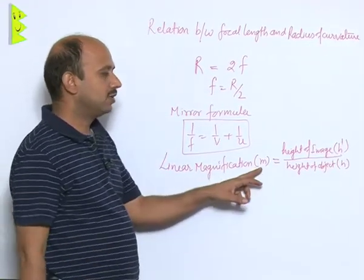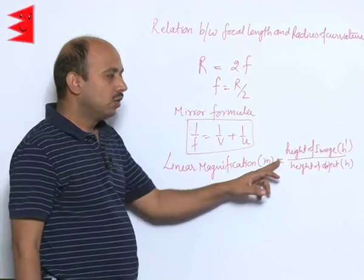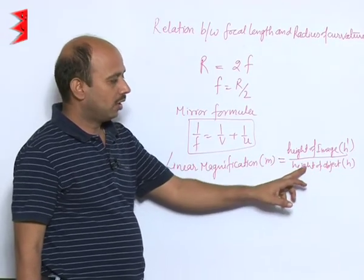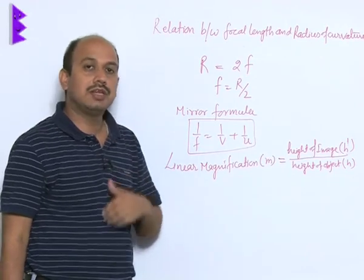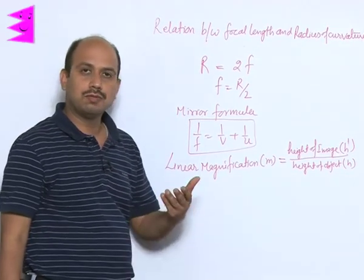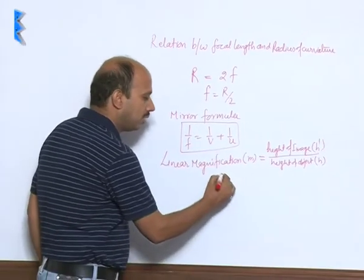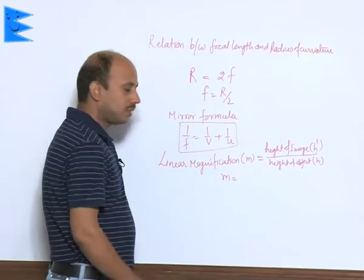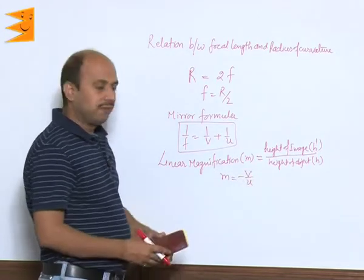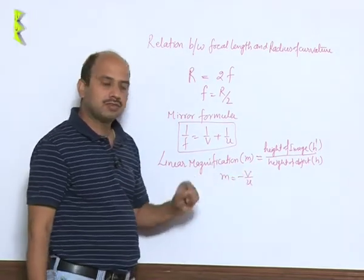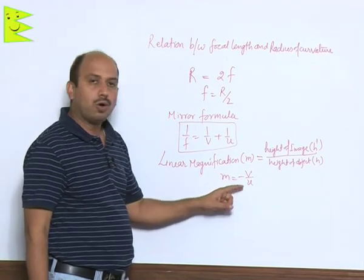Linear magnification m is equal to height of the image upon height of object. Linear magnification is basically the ratio of height of image to the height of object. We can also write m is equal to minus v upon u, where v is image distance, u is object distance.